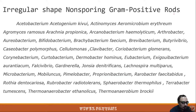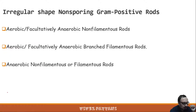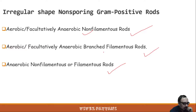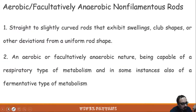Irregular non-sporing gram-positive rods include three subgroups: aerobic or facultative anaerobic non-filamentous rods; aerobic and facultative anaerobic branched filamentous rods; and anaerobic filamentous or non-filamentous rods. The first group is non-filamentous, the second is filamentous, and the last one is filamentous or non-filamentous but anaerobic.